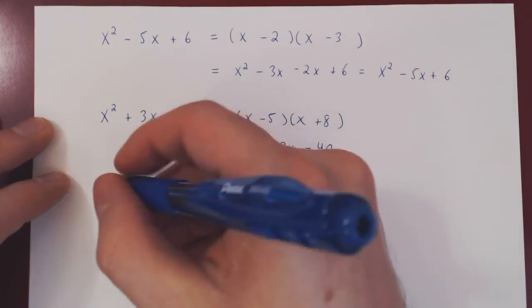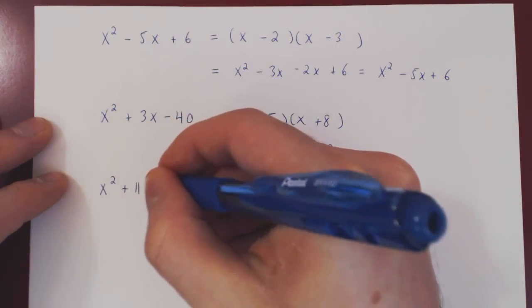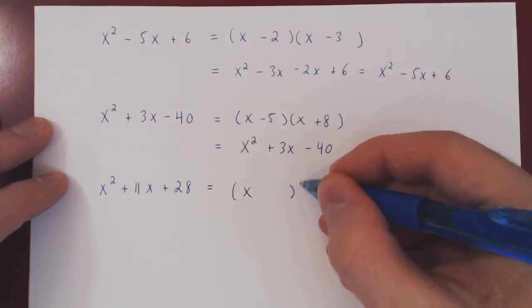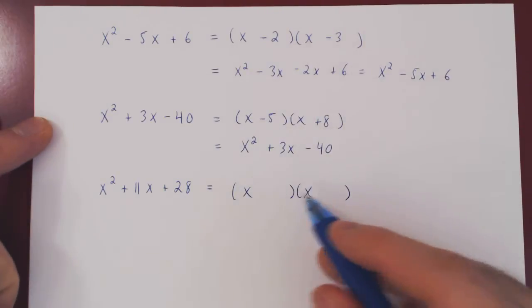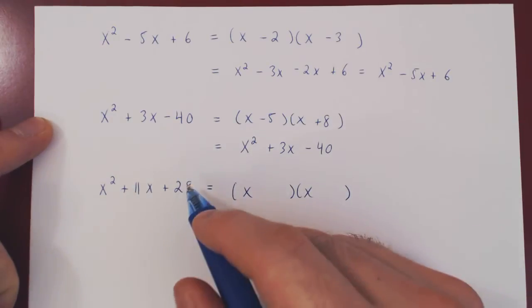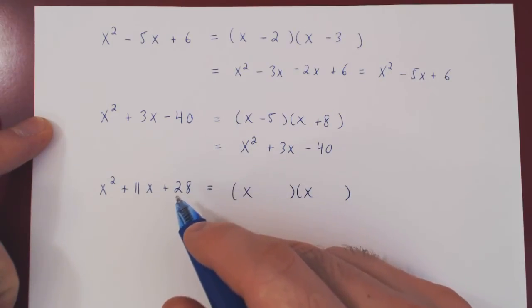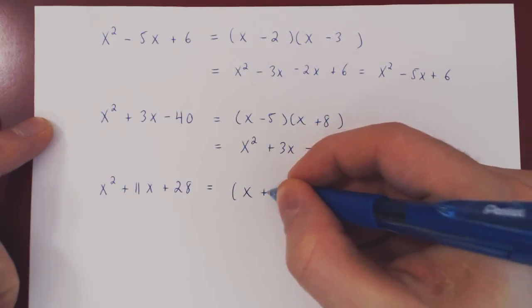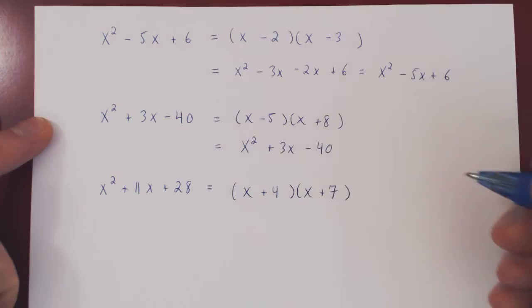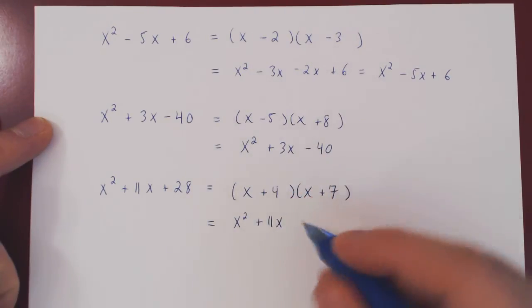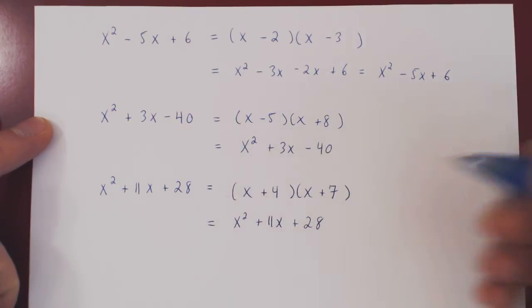Let's look at one more example. x² + 11x + 28. Once again, we'll try and factor by inspection, using the sum and product trick. Now we need two real numbers whose product is 28, whose sum is 11. Think of factoring 28, thinking of a sum being 11. Well, 28 factors as 4 times 7, and 4 plus 7 is 11. So this should be (x + 4)(x + 7). Let's verify. x times x is x² plus 7x plus 4x is indeed 11x, plus 4 times 7 is plus 28. Check.